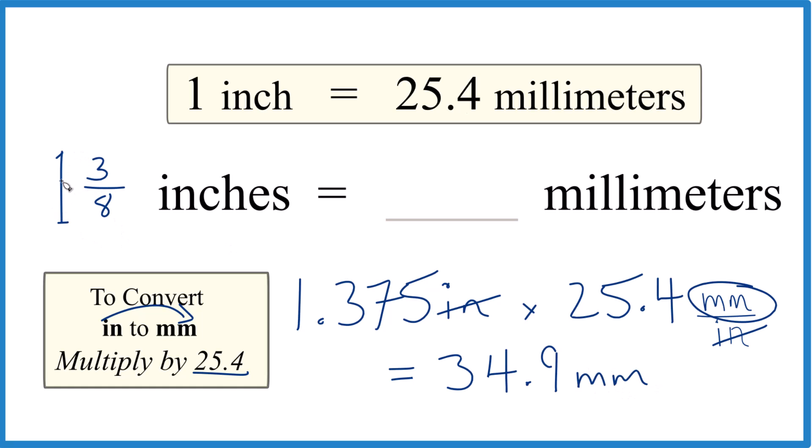So in answer to our question, 1 3/8 inches or 1.375 inches equals 34.9 millimeters.